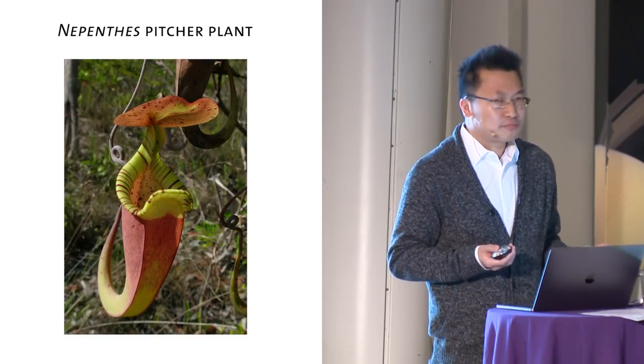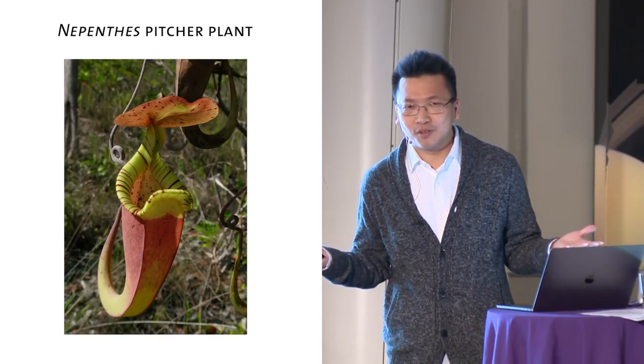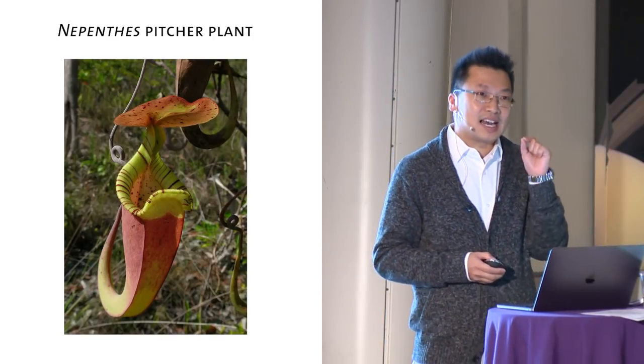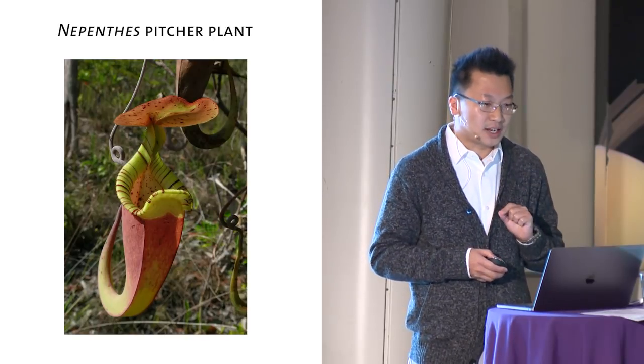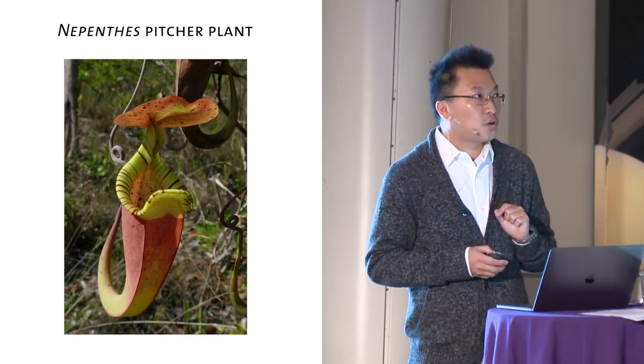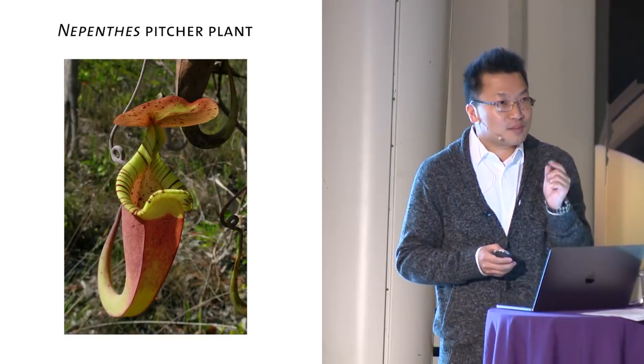So, the question is, how can they capture insects if they don't move at all? The secret lies at the surface of their rim. Their rim can get really slippery when it is wetted. So, curious about how it works? Let me show you a video.